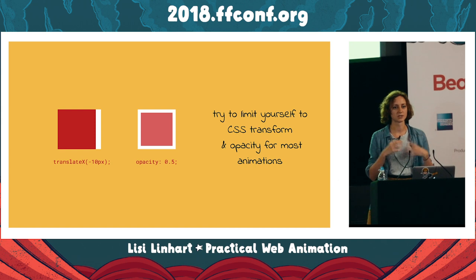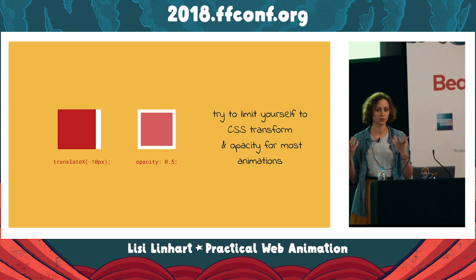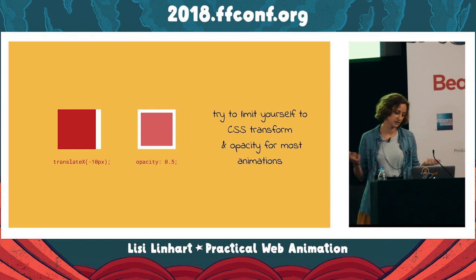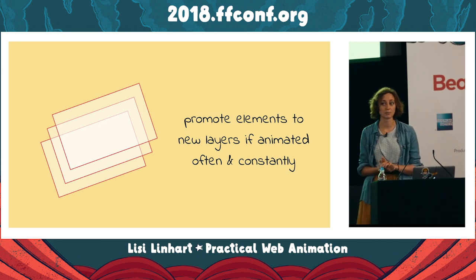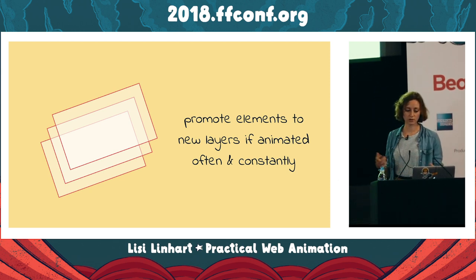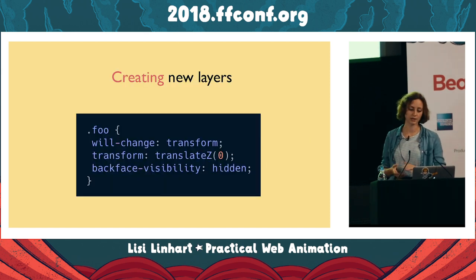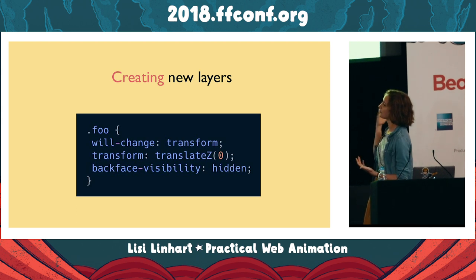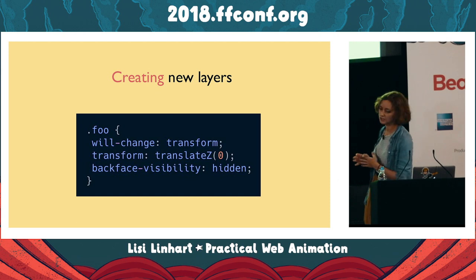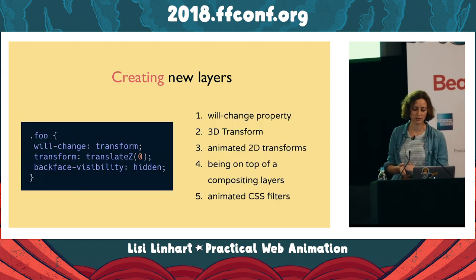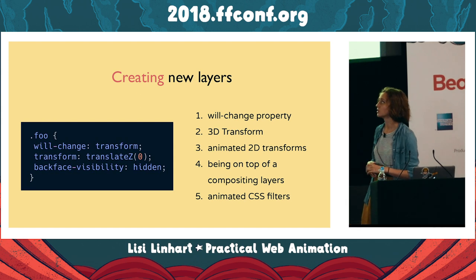Another good tip is to promote elements to new layers if they're animated often and consistently. We can do this using the will-change property, setting it to the property we're changing consistently. We can also create new layers using 3D transforms like translateZ or translate3D. Other things that create new layers include animated 2D transforms, being on top of a compositing layer, or animated CSS filters.